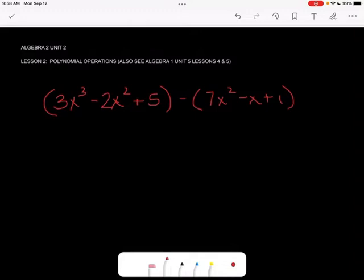We're subtracting here, just be careful, because we are subtracting this whole thing. We're subtracting that whole 7x squared minus x plus 1. So I need to make sure that I distribute this negative to everything in there, because we're subtracting everything in there.